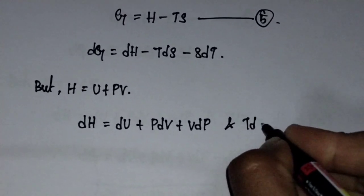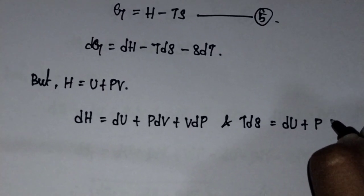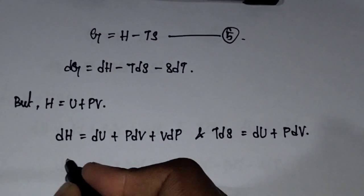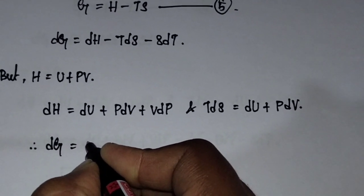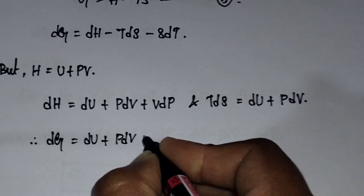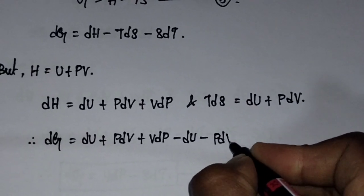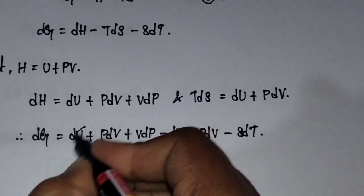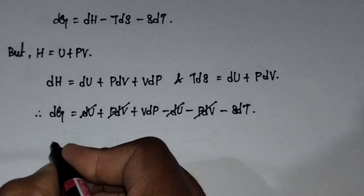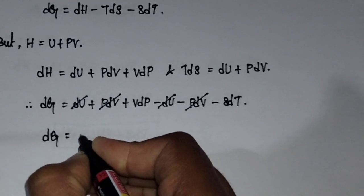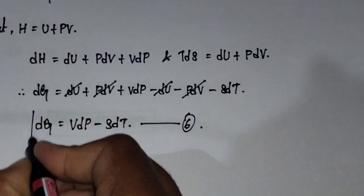And T·dS equals dU plus P·dV. Substituting these into the equation, dG equals dU plus P·dV plus V·dP minus dU minus P·dV minus S·dT. Here the plus P·dV and minus P·dV cancel, and we get the final equation: dG equals V·dP minus S·dT. Take this as equation number six.